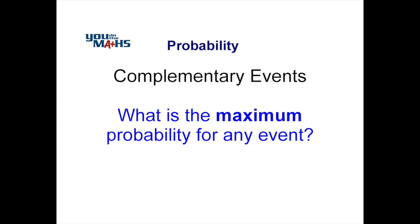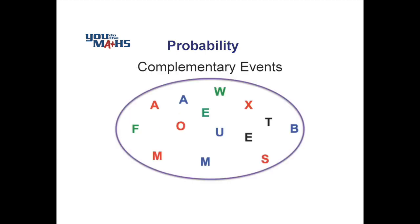In this video we're having a look at complementary events. Before we get an understanding of what that means, we need to work out what the maximum probability for any event is — in other words, for anything occurring. We can determine that by having a look at some very simple examples. Let's look at our diagram of a series of letters in the alphabet and work out some different probabilities.